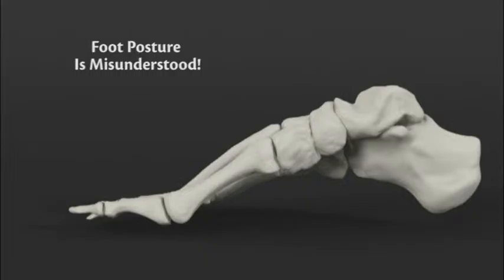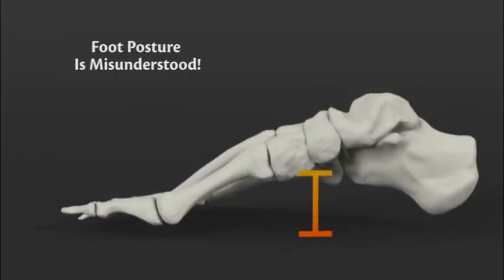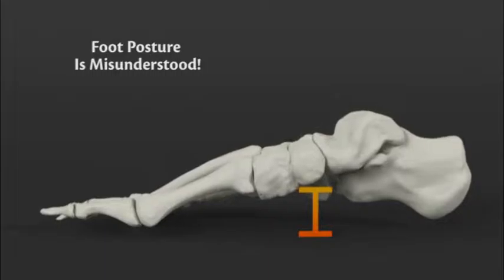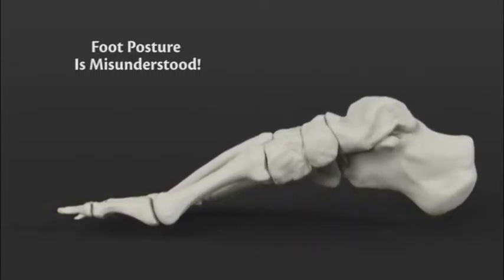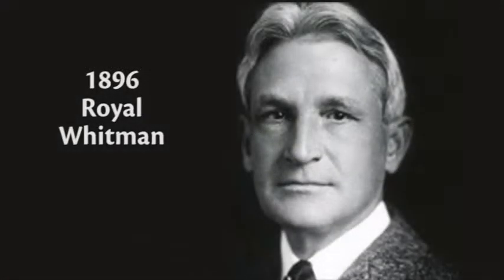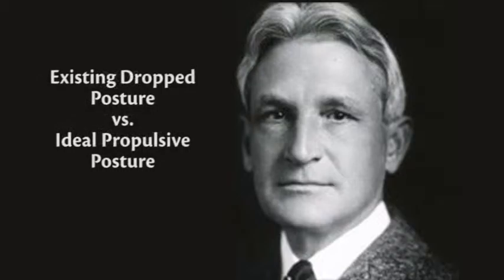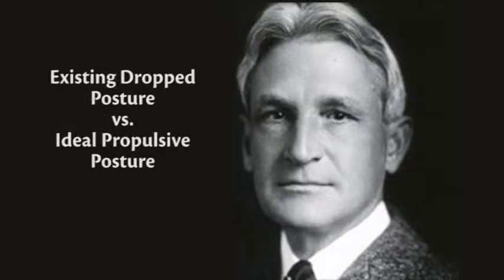Even foot posture is misunderstood. It is easy and tempting to assess foot posture in relation to the ground. The ground is flat and collapsed posture gives us a flat foot. A reasonable comparison. I believe that Royal Whitman in 1896 was looking at foot posture from the opposite perspective.